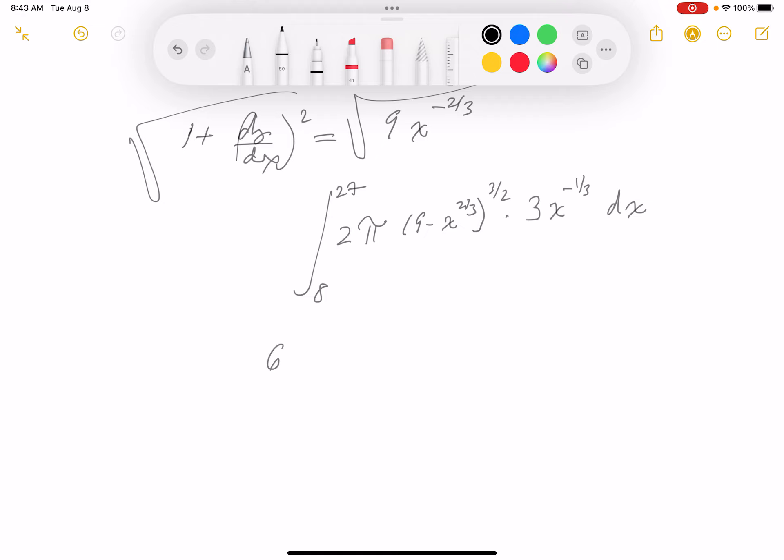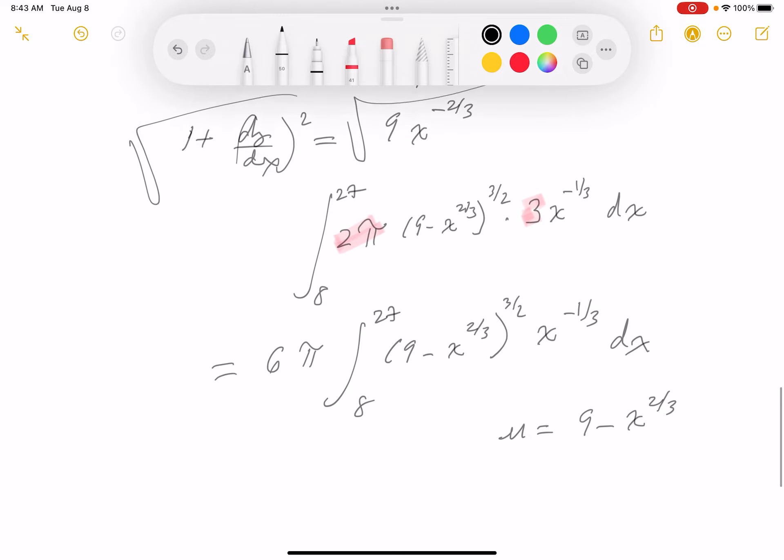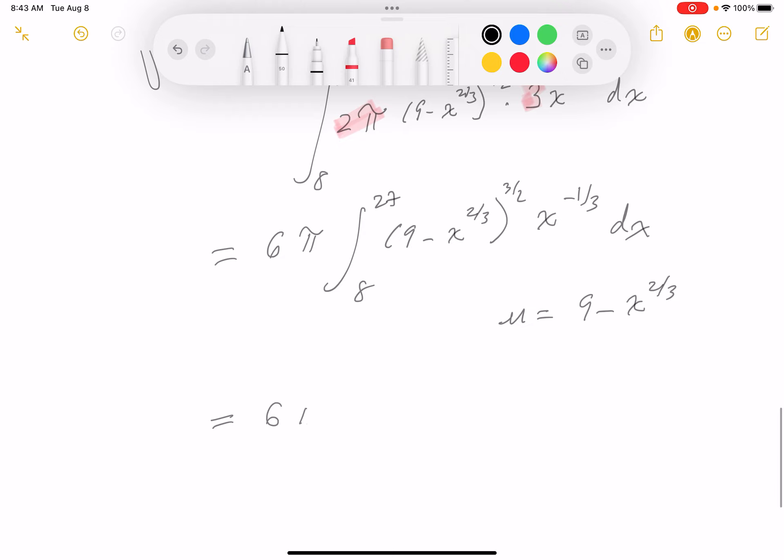I've got to do that integration. I'm going to pull the number out. That gives me 6 pi. I'm left with 9 minus x to the 2 thirds to the 3 halves, x to the minus 1 third dx between 8 and 27. I'm going to make a u substitution now. I'm going to let u equal 9 minus x to the 2 thirds. Let me put the du down for you. It's going to be minus 2 thirds x minus 1 third dx.